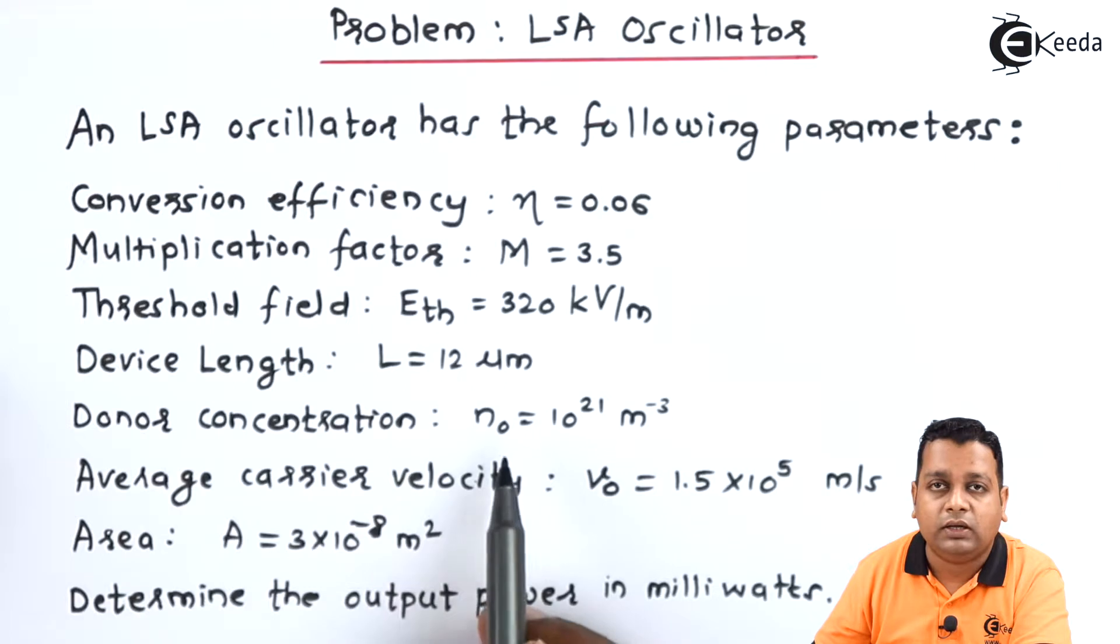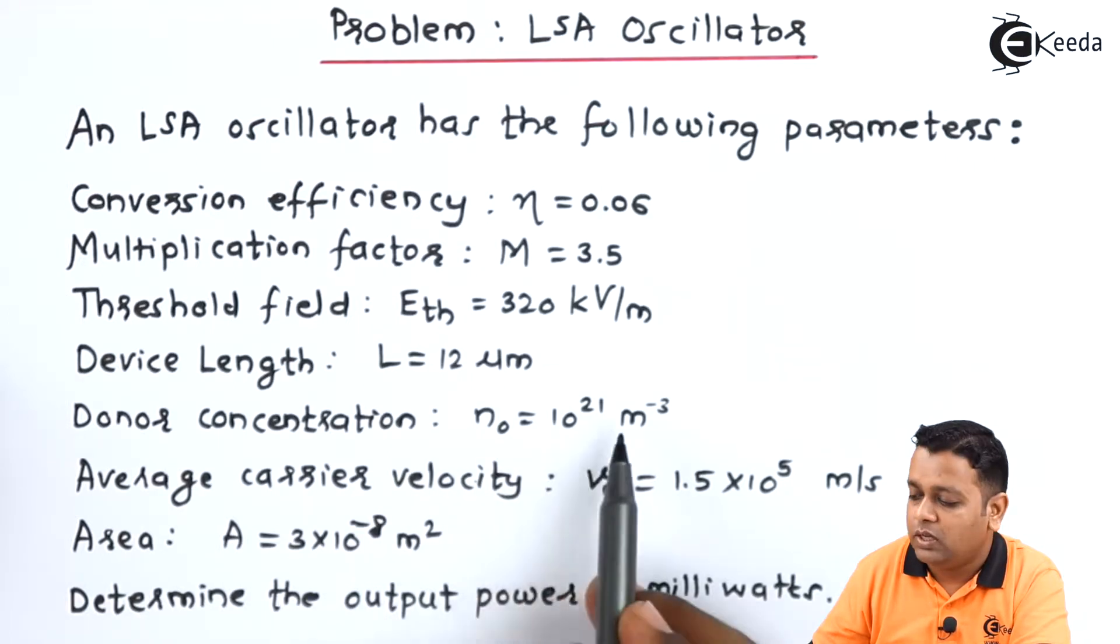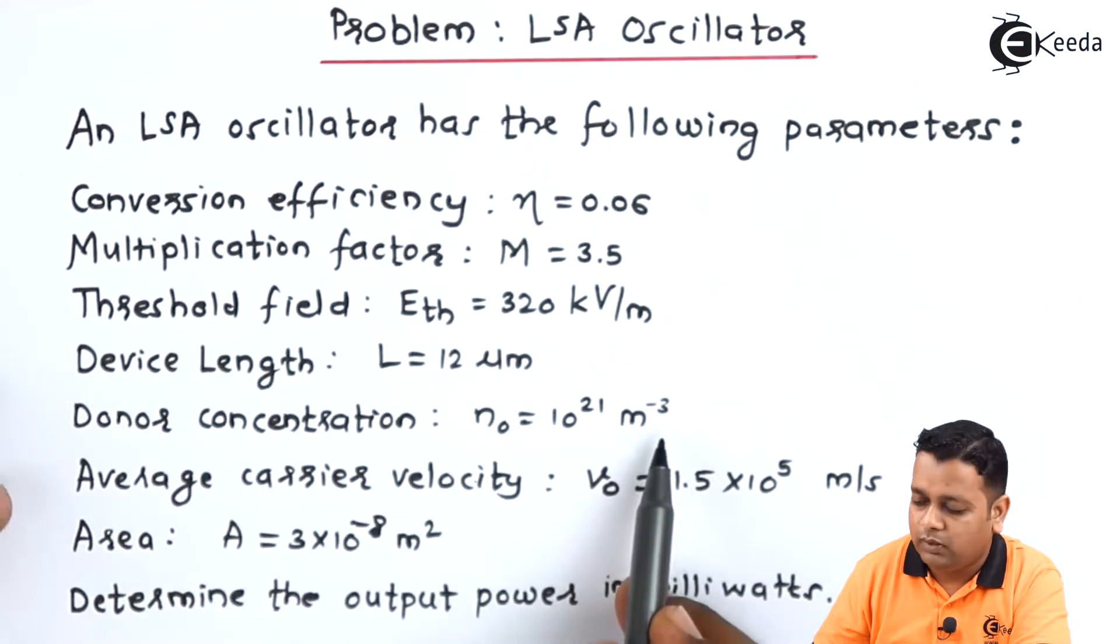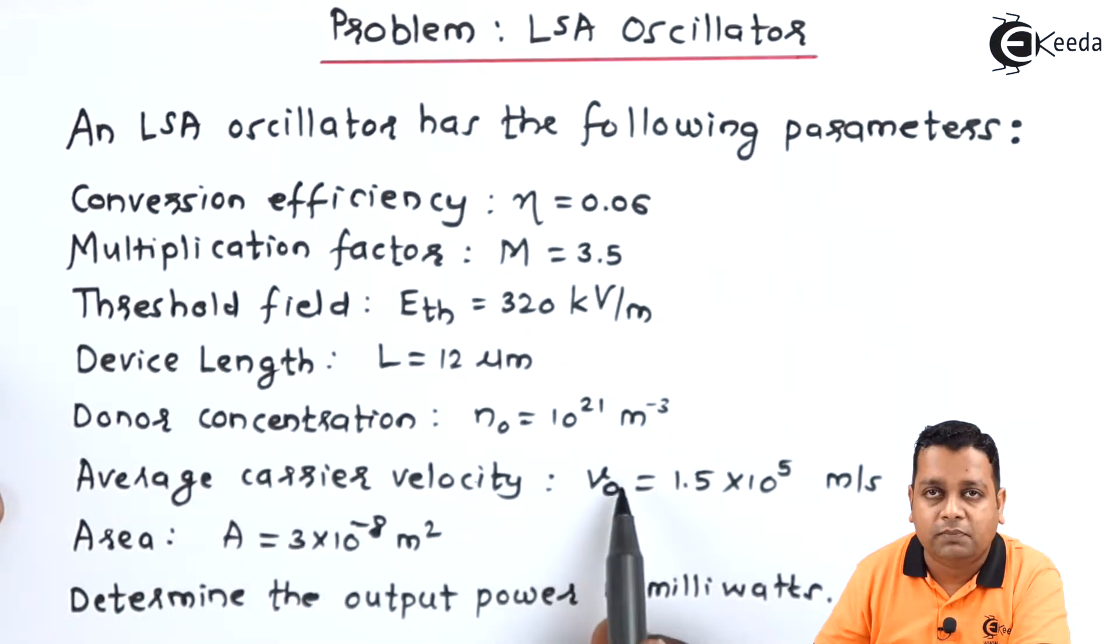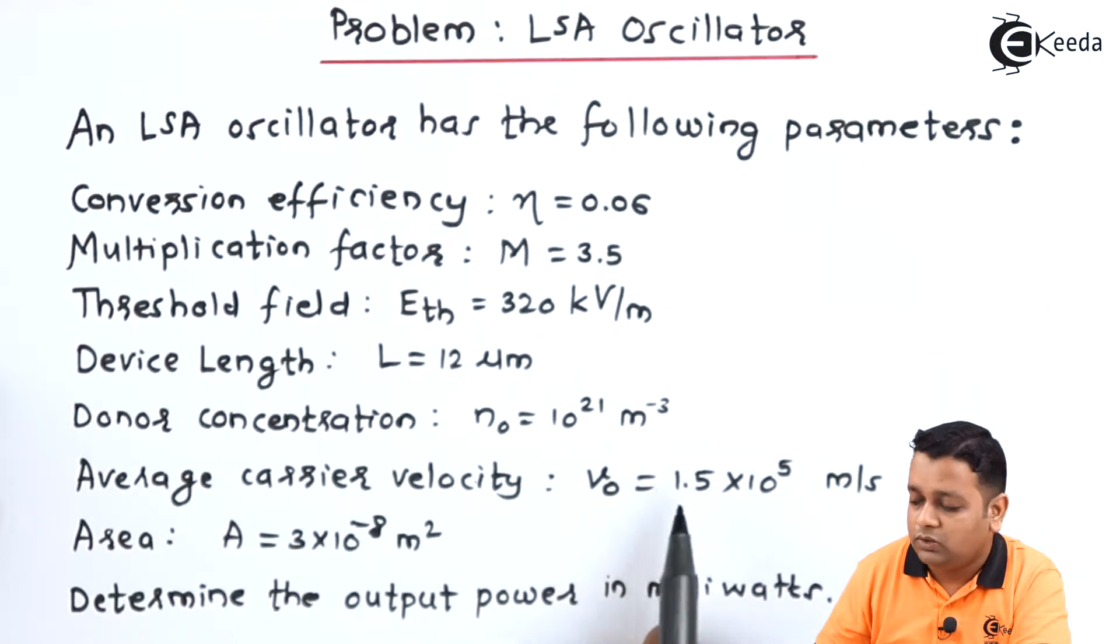The donor concentration represented by N₀ holds the value 10 raised to power 21 per meter cube. Average carrier velocity is represented as v₀ and has the value 1.5 into 10 raised to power 5 meter per second.